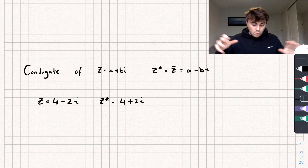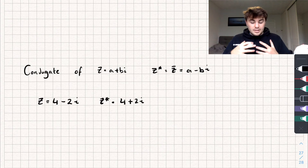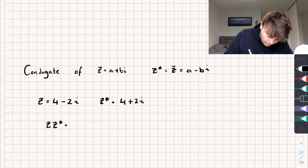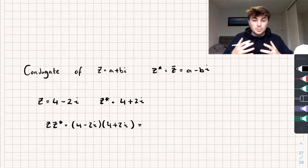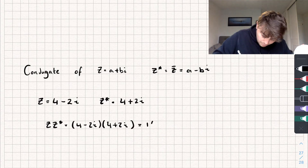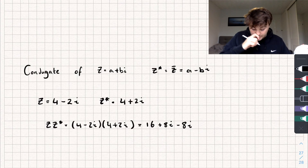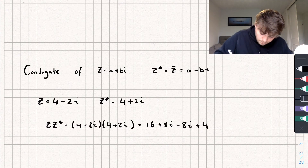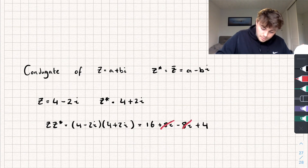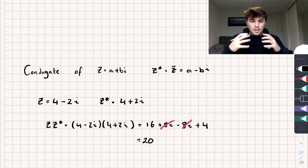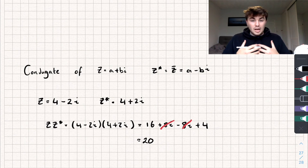All you're doing is swapping the sign of the imaginary part. This is really useful — let's see what happens when we multiply a complex number by its conjugate. So z multiplied by z star is 4 minus 2i multiplied by 4 plus 2i. We get 4 times 4 = 16, plus 8i, minus 8i, and negative 2i times 2i gives negative 4i squared, which is plus 4. The imaginary parts cancel out and we're left with just 20. So multiplying a complex number by its conjugate removes the imaginary part, leaving a real number.